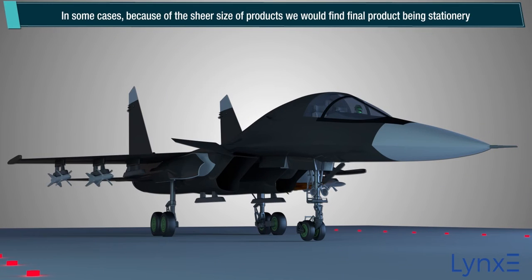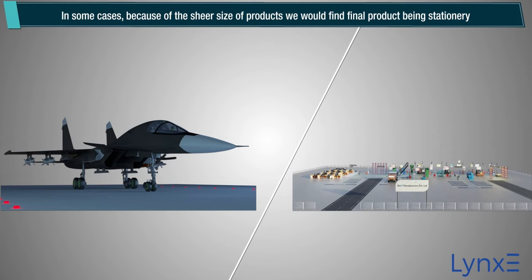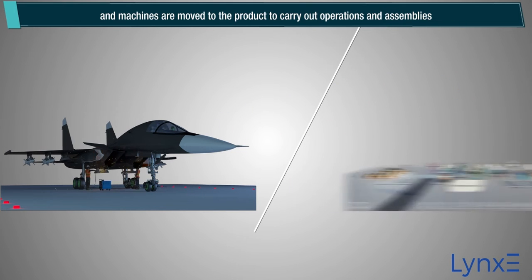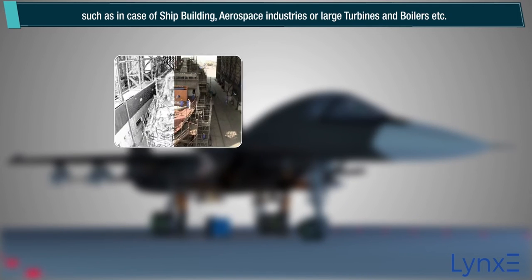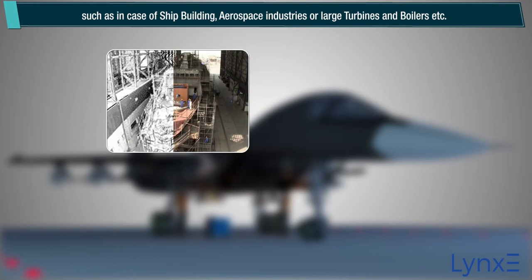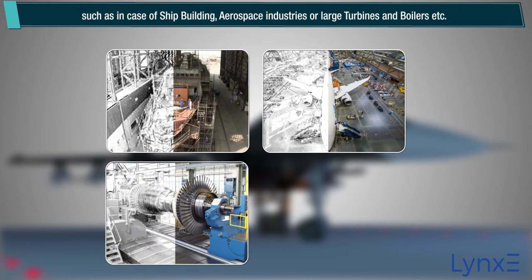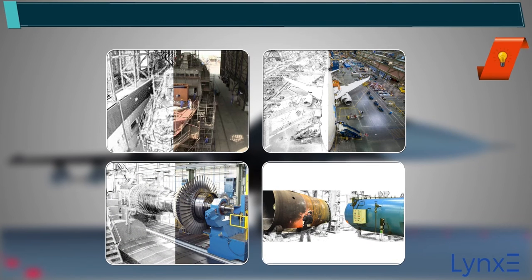In some cases, because of the sheer size of products, we would find the final product being stationary and machines are moved to the product to carry out operations and assemblies, such as in the case of ship building, aerospace industries, or large turbines and boilers.